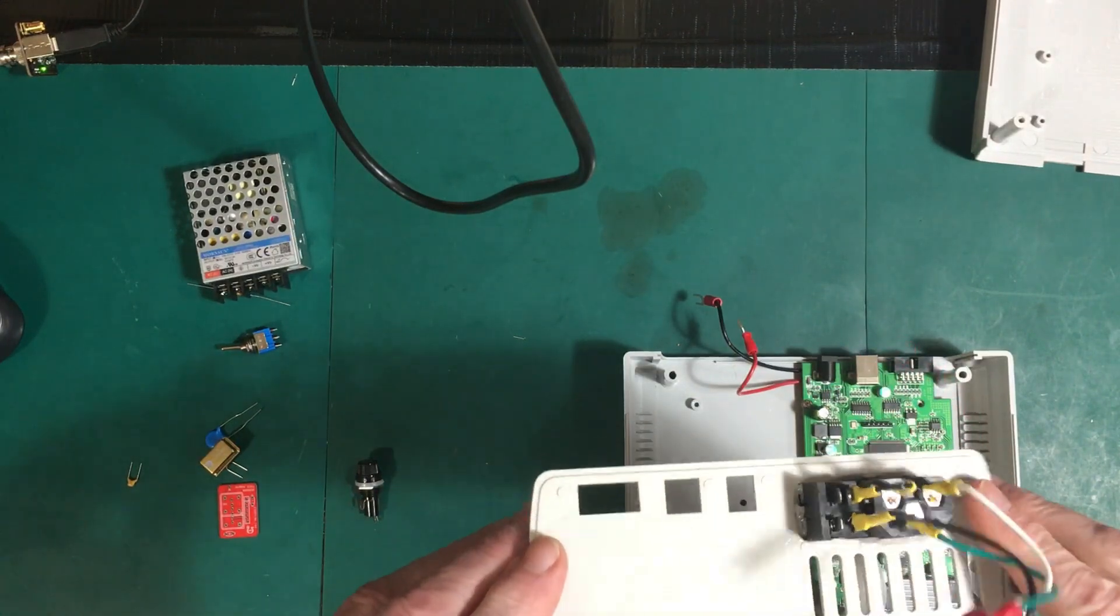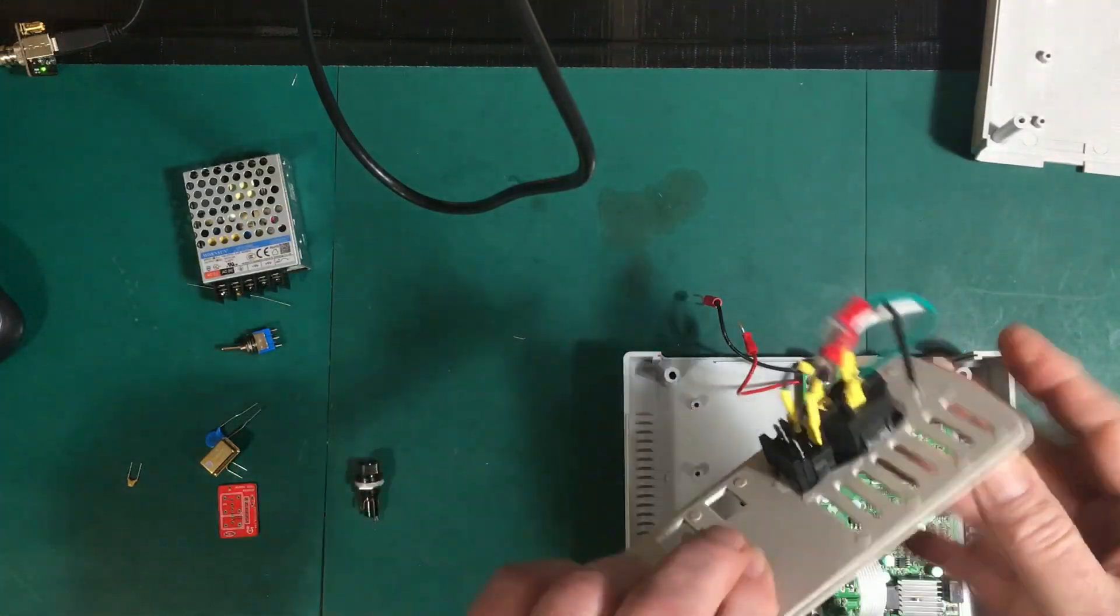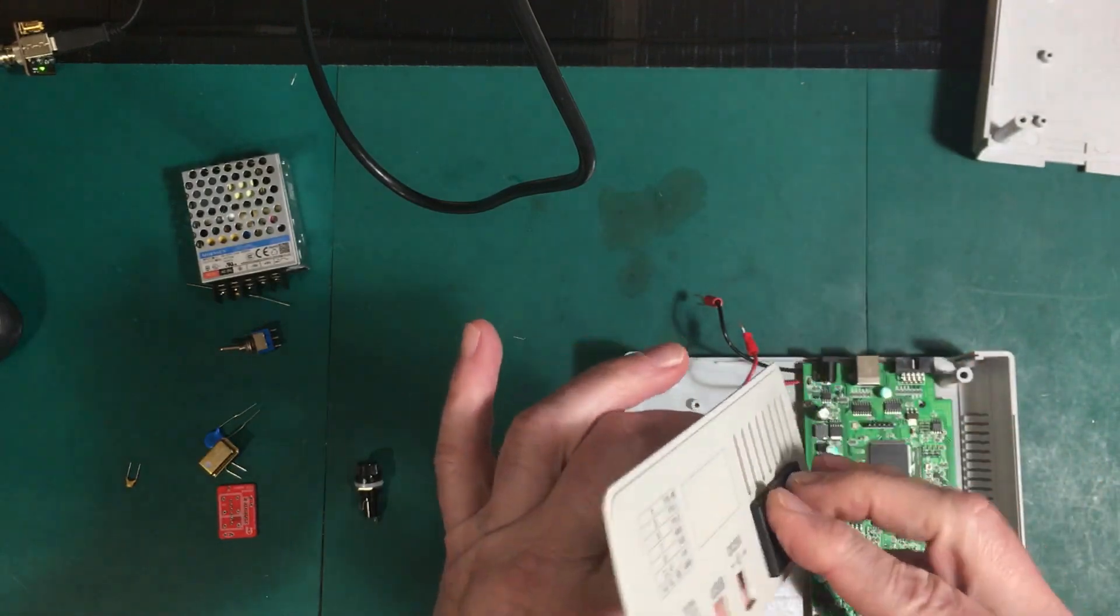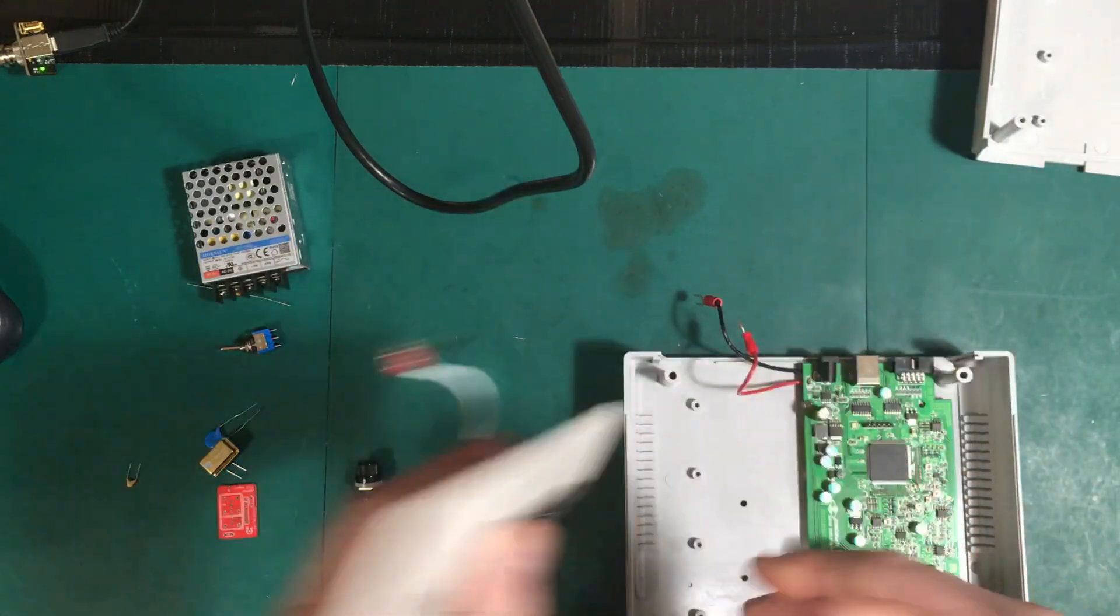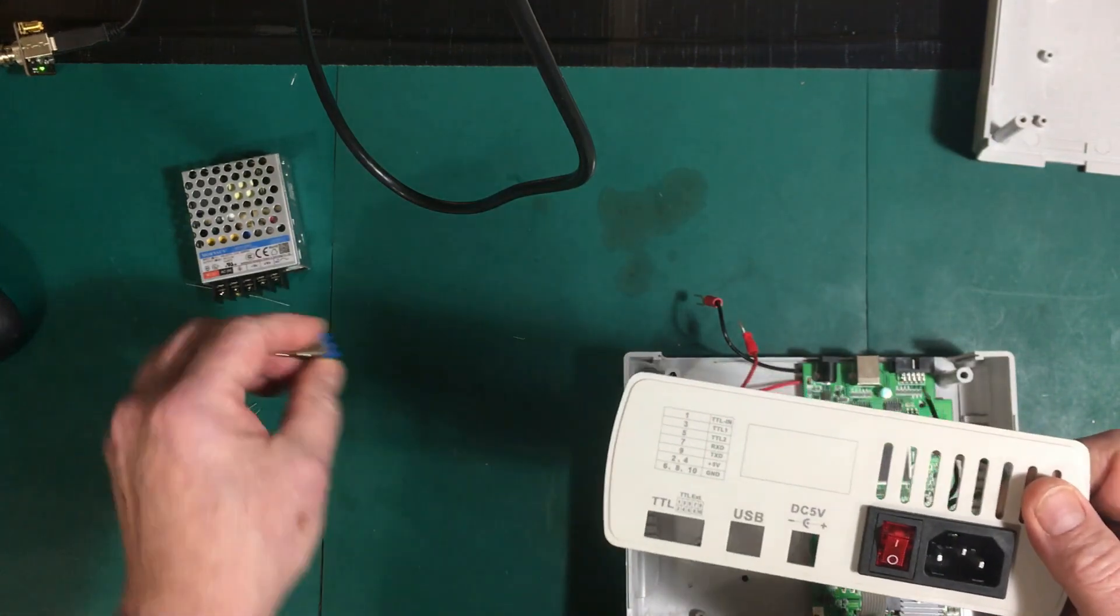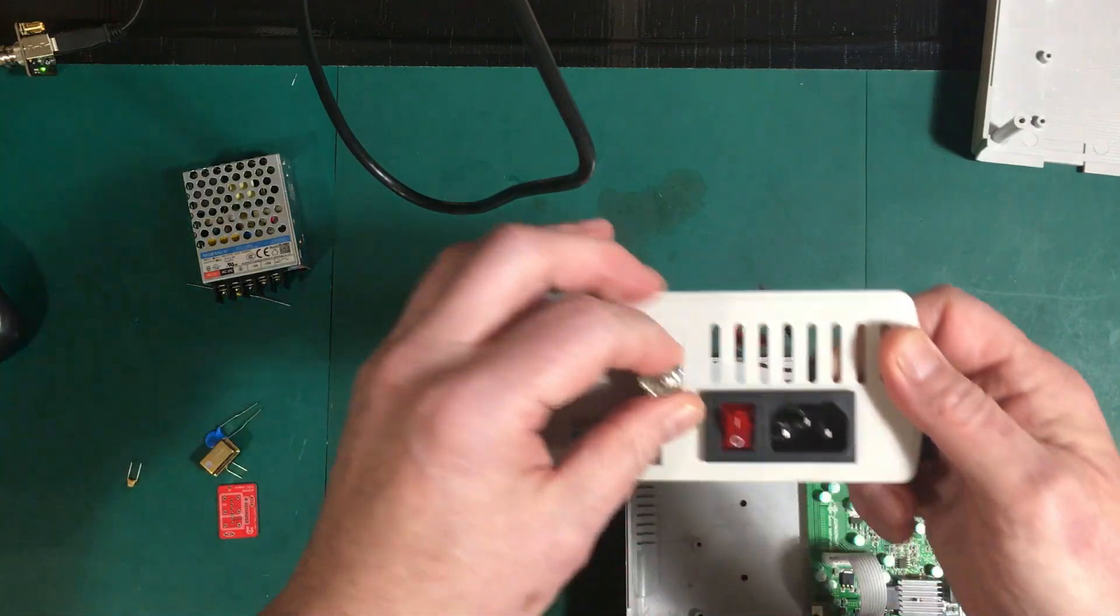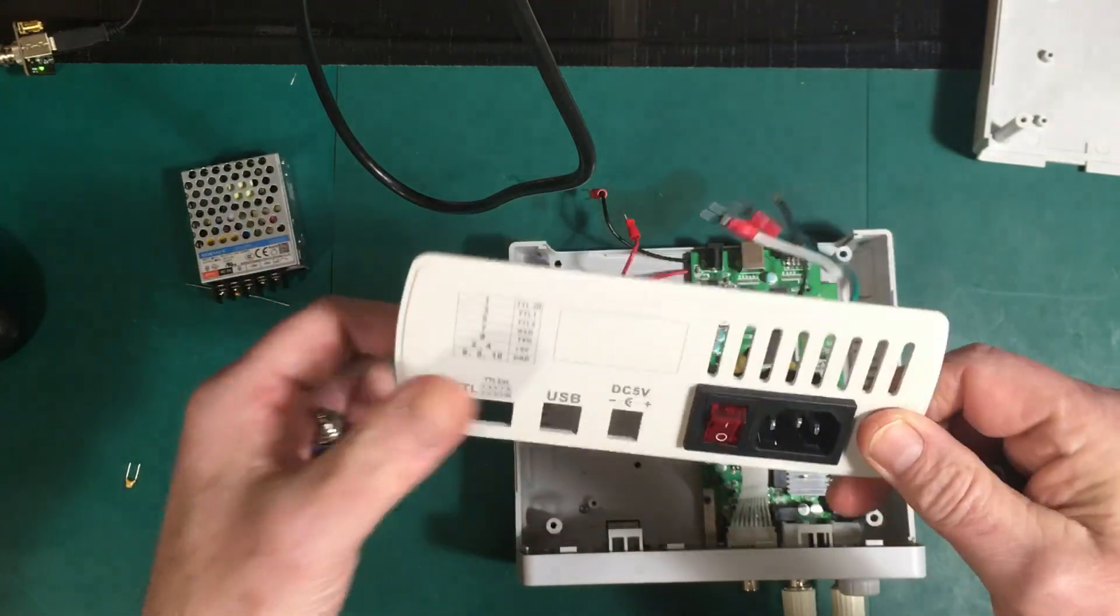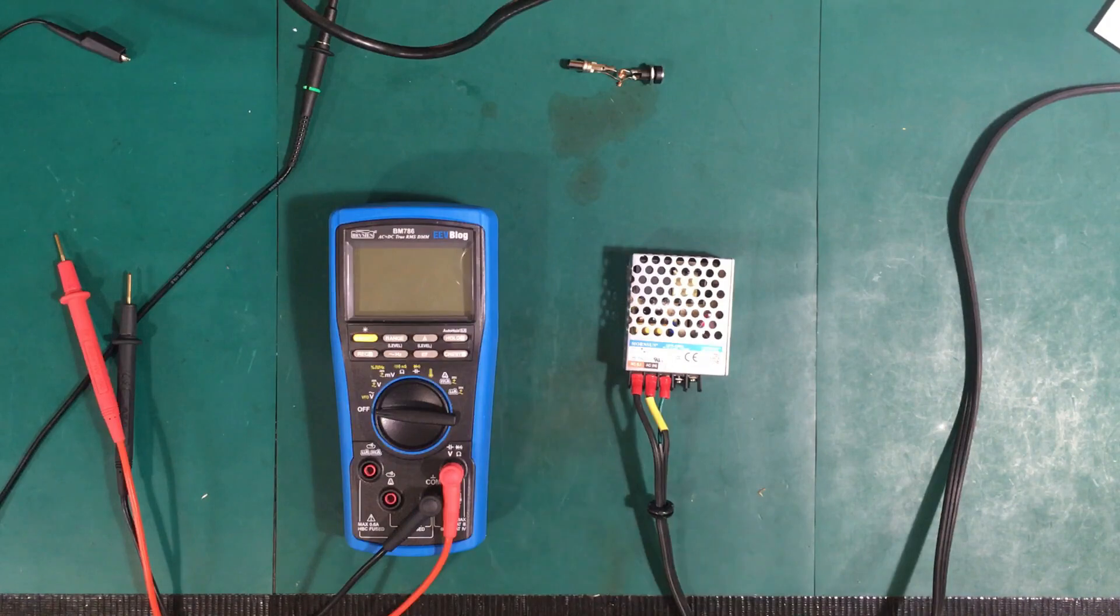Unfortunately we had a camera malfunction there. Something didn't get recorded - my cutting open the hole for the IEC connector and switch and mounting it in place. The next thing I got to mount in here is the fuse holder and the grounding switch.